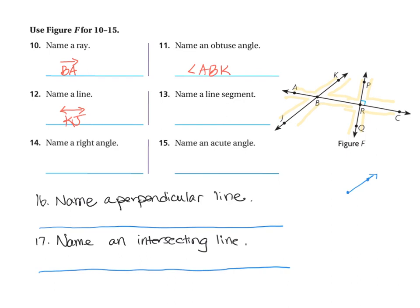The next question says name a line segment. The key thing about line segments is they don't have arrows on both sides. So I'm limited in where there's a line segment. A line segment goes from one point to another because it has two endpoints — it's part of a line, it has a start and an end, it doesn't go on forever. I wouldn't be able to do AC because those have arrows. So my only choice is segment BR, and I'll write it as line segment BR.